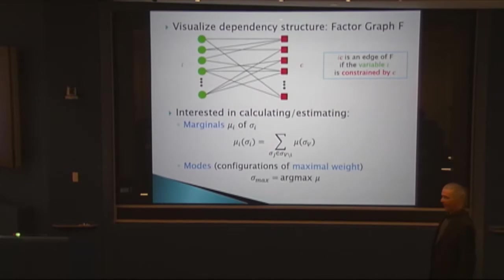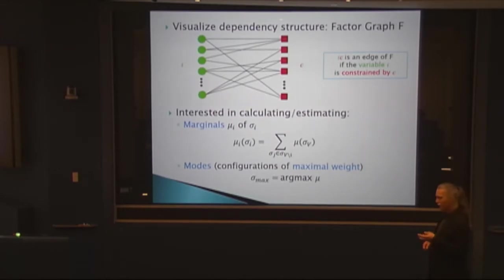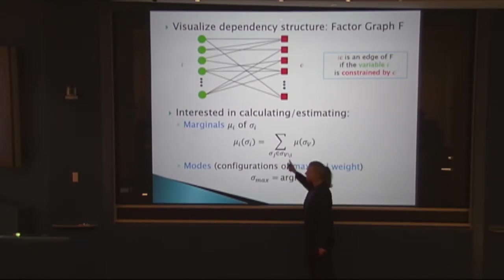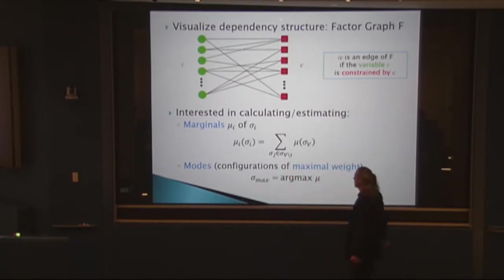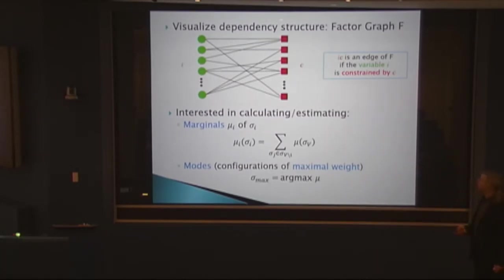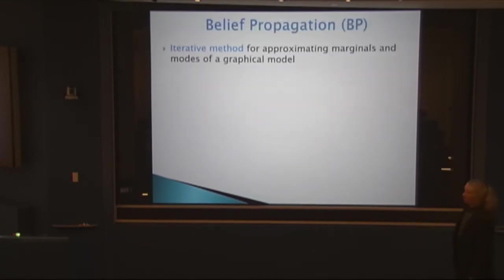What we want to calculate is perhaps the probability distribution of my color. For that, I take into account the constraint that if Jennifer is black I can't be black, accounting for the probability of each color. I sum out all colors except for i, and get what's called the marginal of variable sigma_i. We might want to know this marginal, or we might want the mode — the most likely distribution of colors, i.e., the configuration with maximal weight. Belief propagation is a way to calculate these quantities.